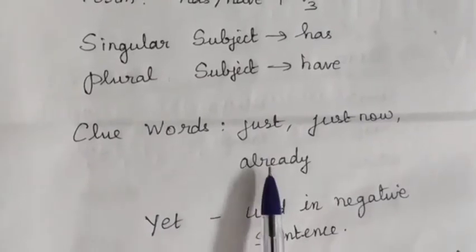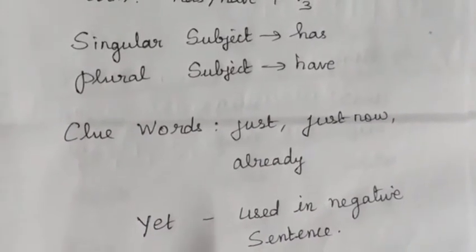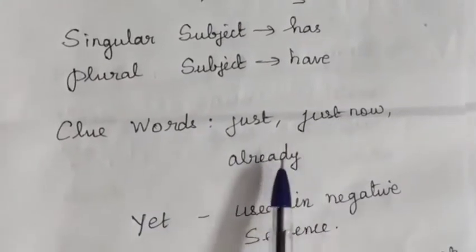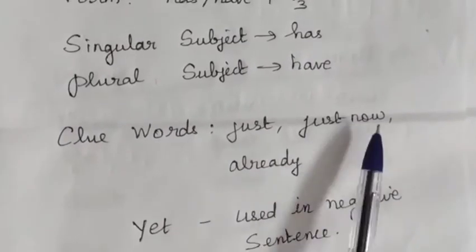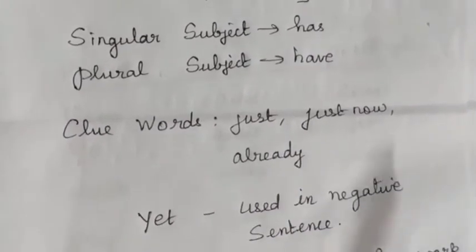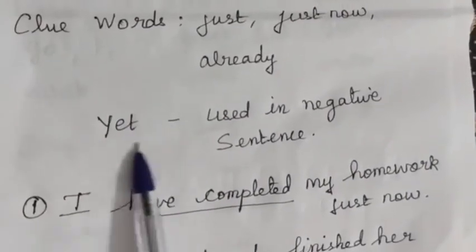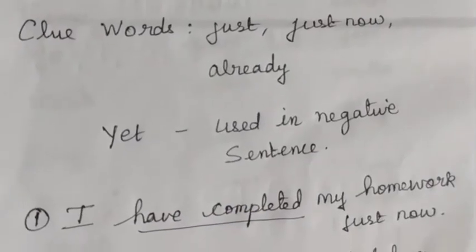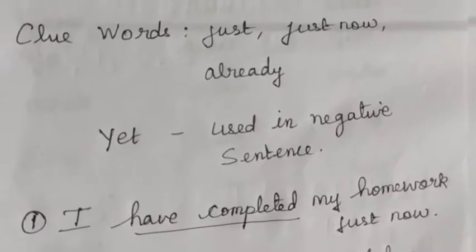'Already' means the action is done — for example, 'Have you finished your homework? Yes, I have already finished my homework.' So just, just now, and already are the clue words used in present perfect tense. 'Yet' is another clue word used in negative sentences.